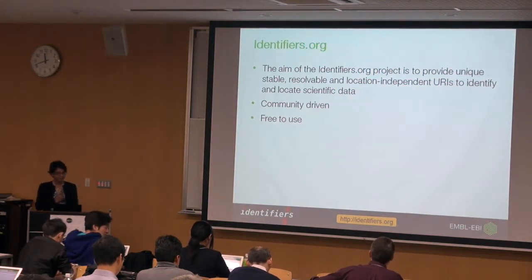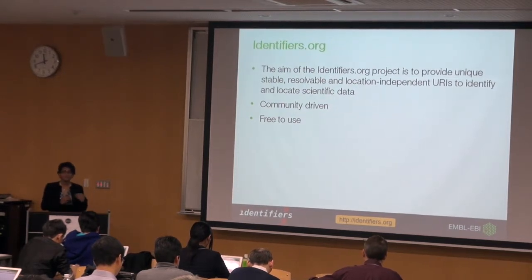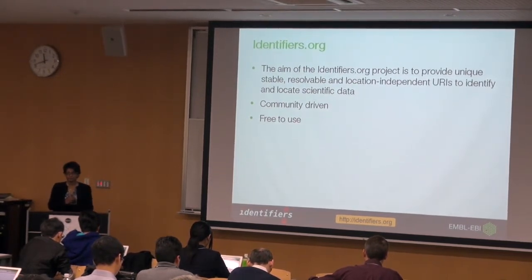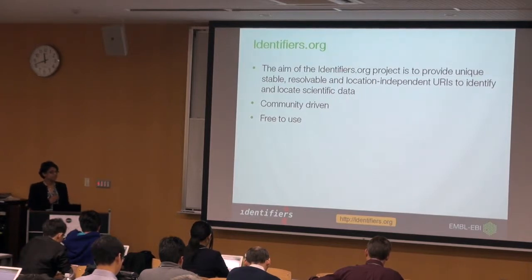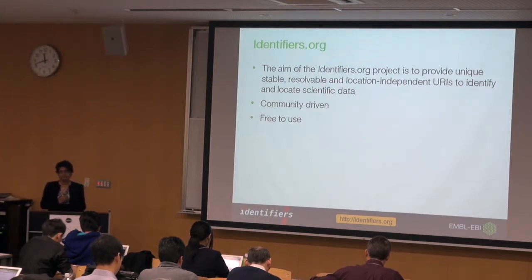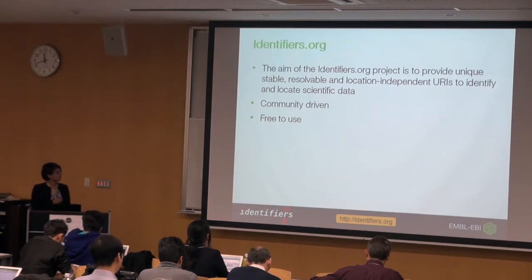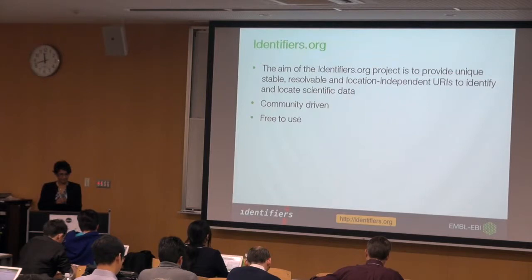The main aim of the Identifiers.org project is to provide stable, unique, resolvable URIs. It is a community-driven project, so all the resources we have are used by someone and are there because someone requested it. It is free to use, so you can ask for more resources to be added, or you can just use Identifiers.org existing URIs.